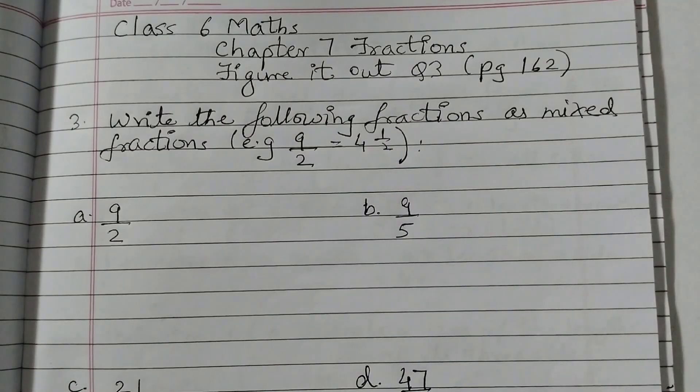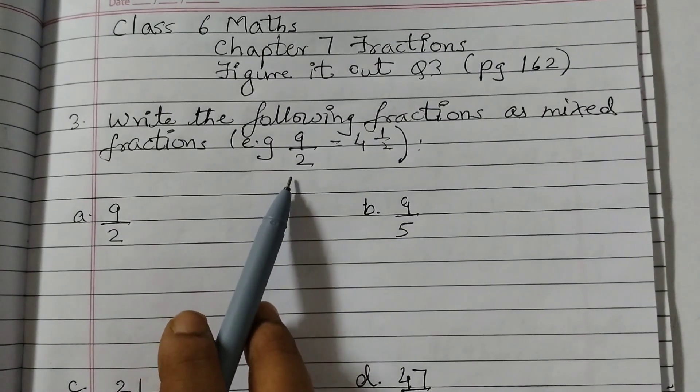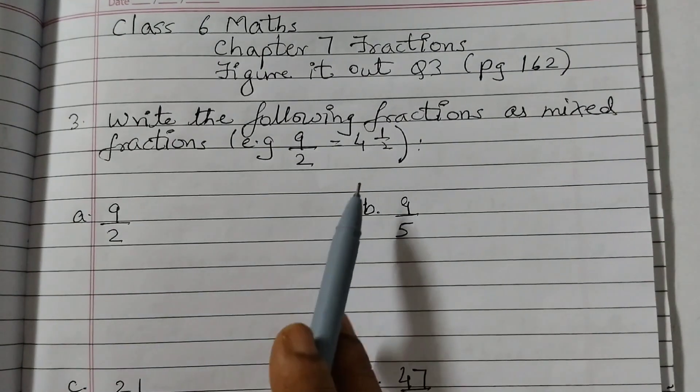So 6 fractions are given, we are going to write it as a mixed fraction. So first one is 9 upon 2, that is your A and the answer is this.